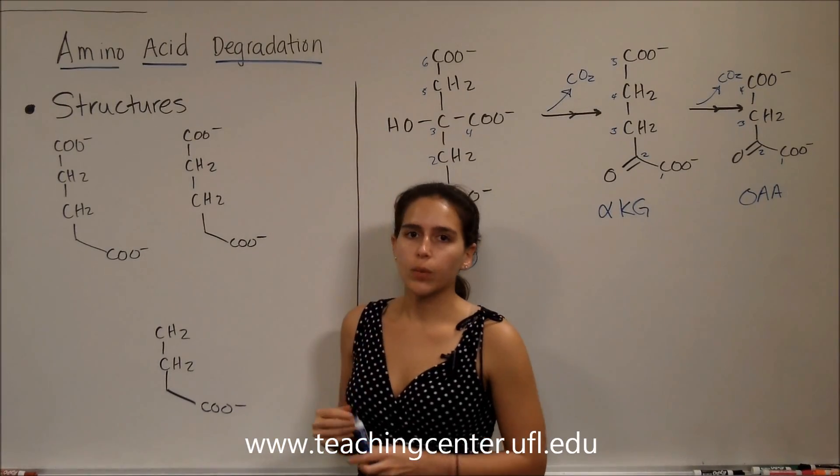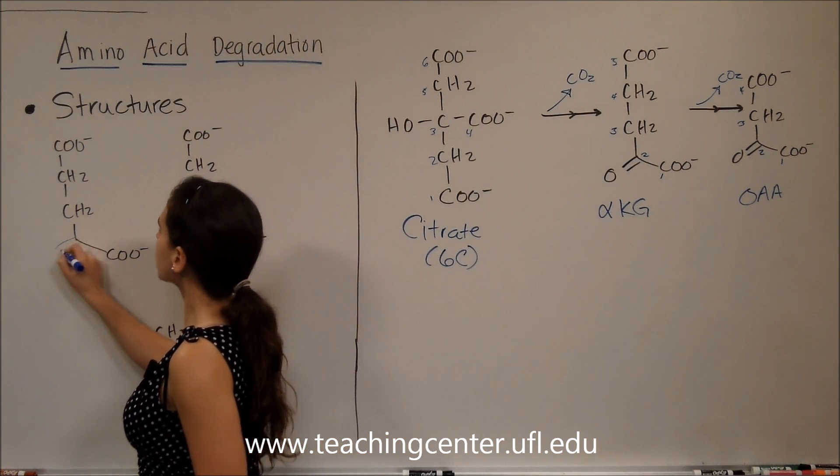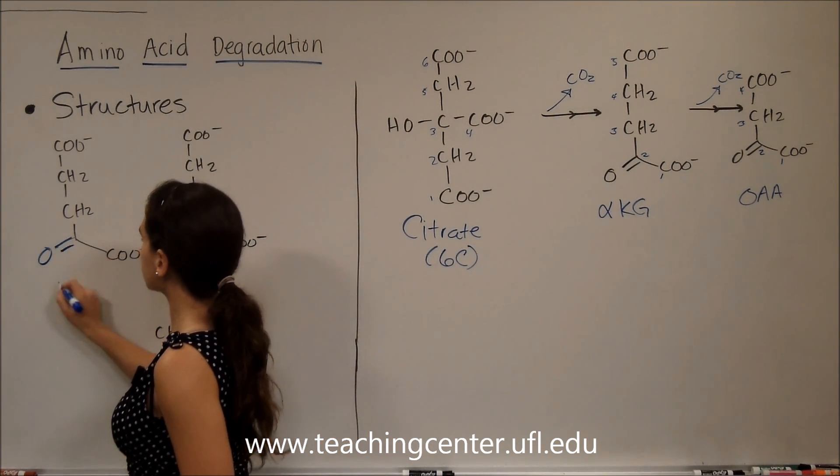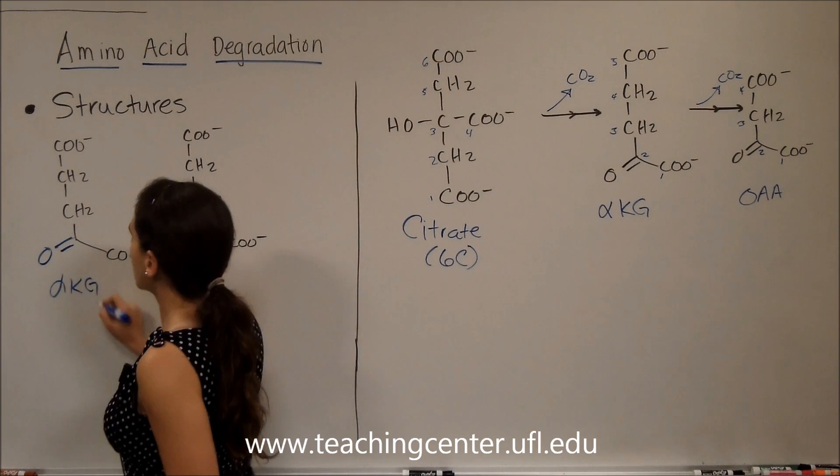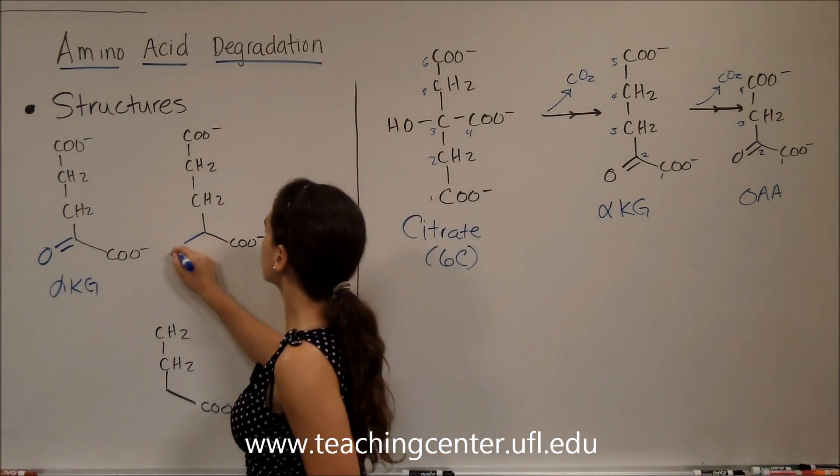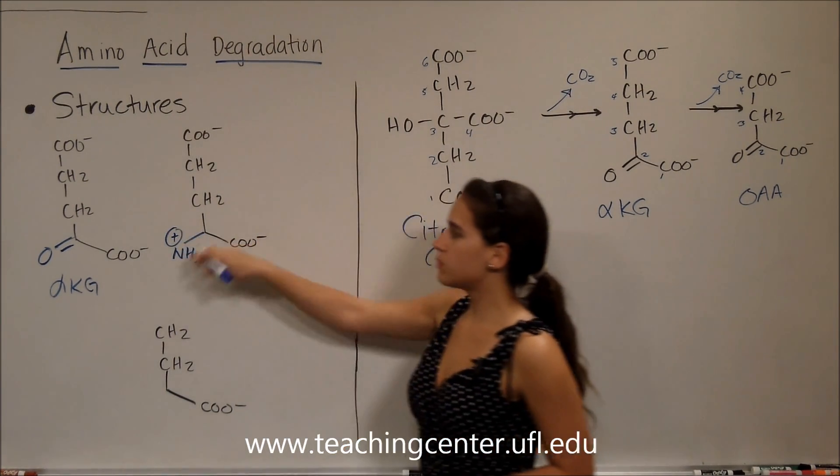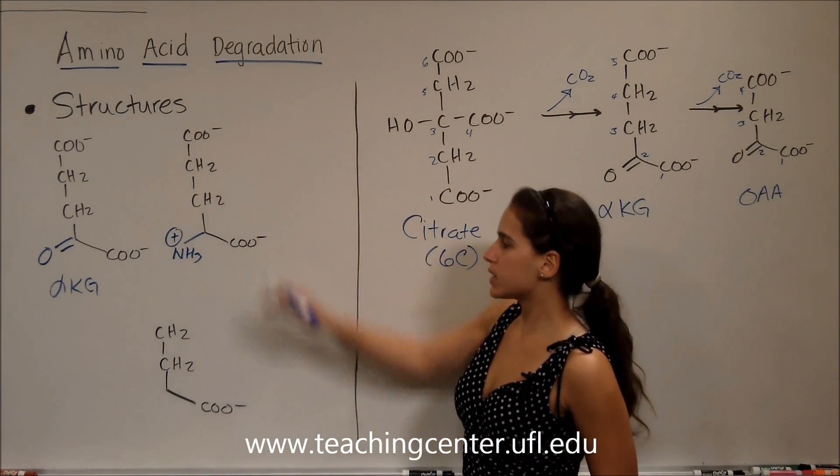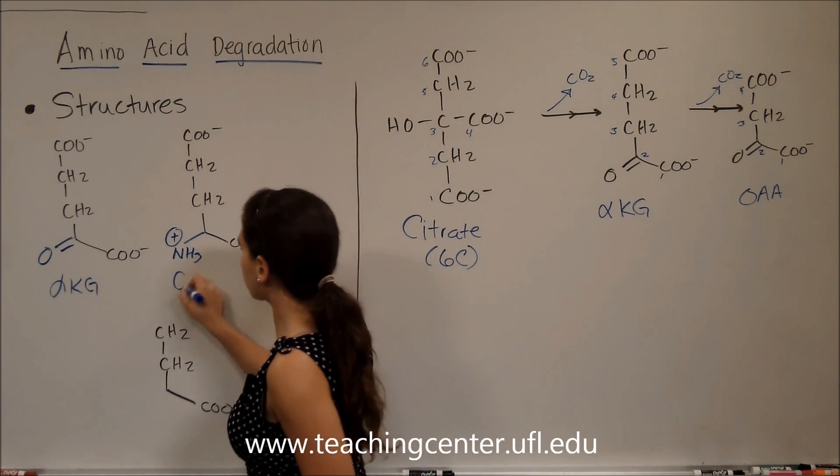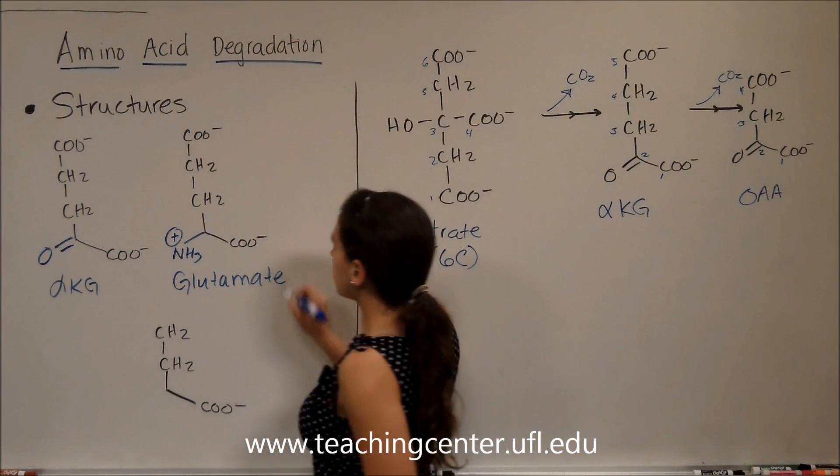So on this side, I've redrawn the backbone of alpha-ketoglutarate. We know that over here is going to be our double bond O to become alpha-ketoglutarate. Well, what happens if we switch that double bond O to an amino group? Now we know we have an amino acid backbone, and this amino acid in particular is glutamate.